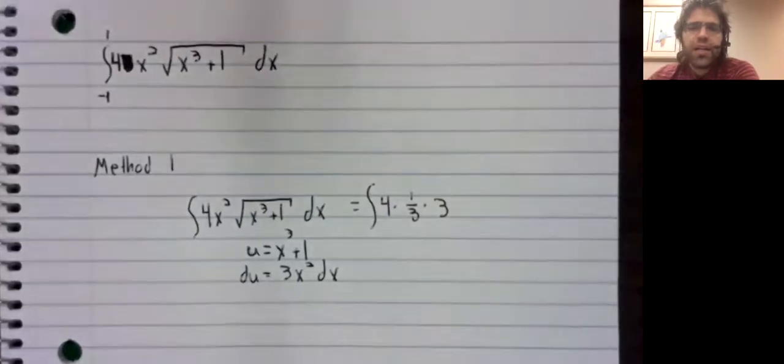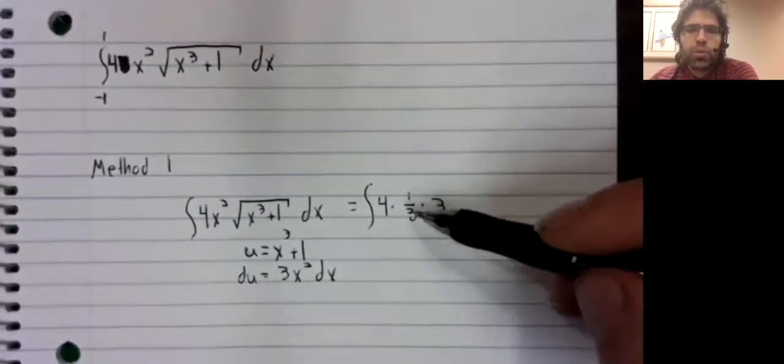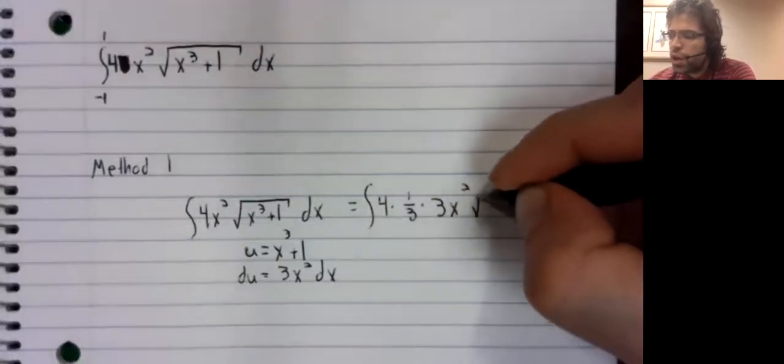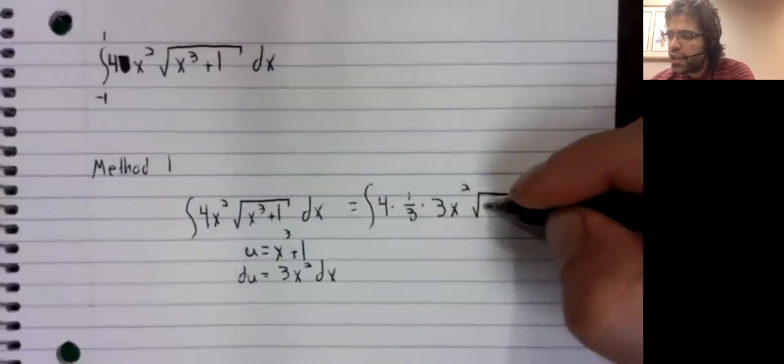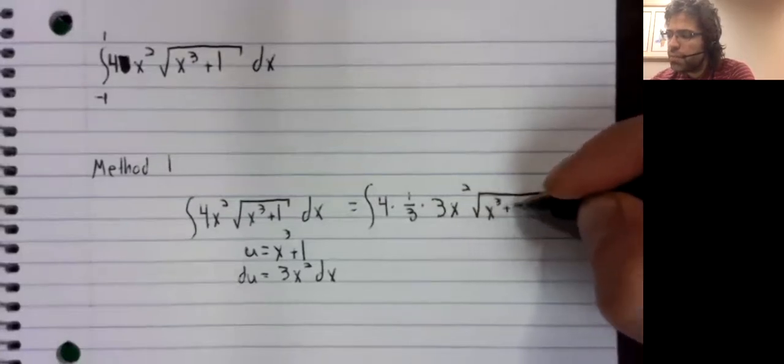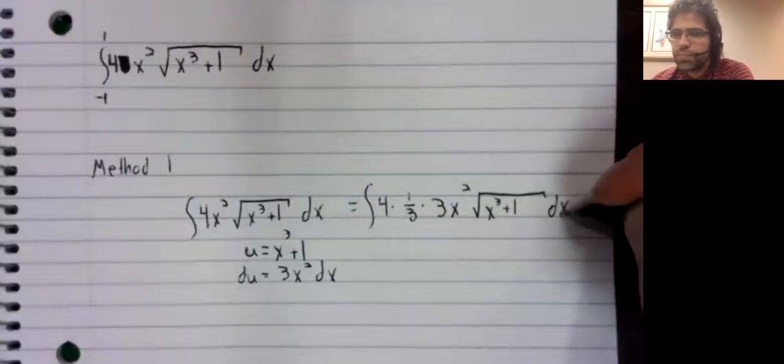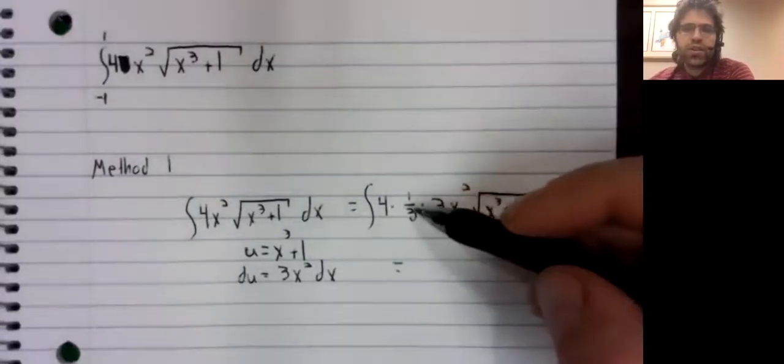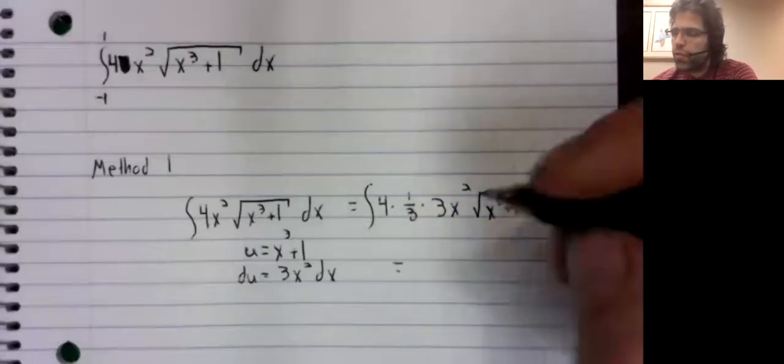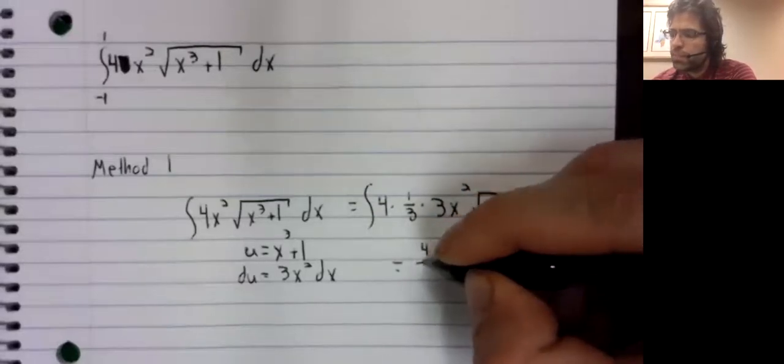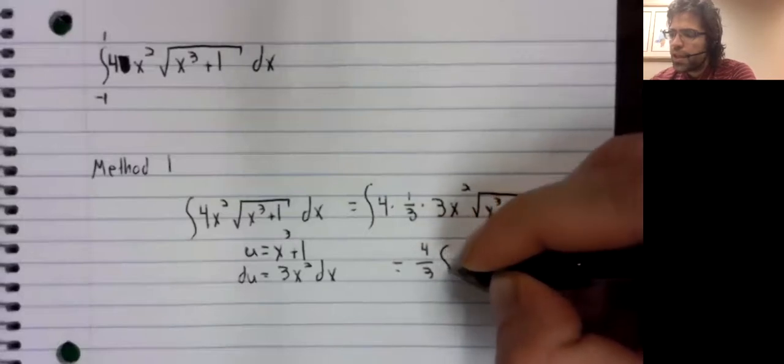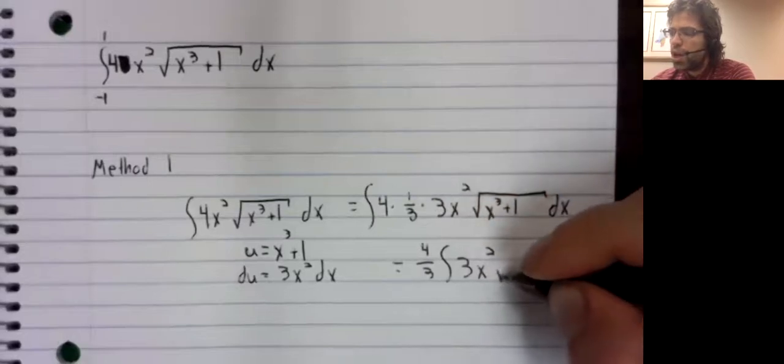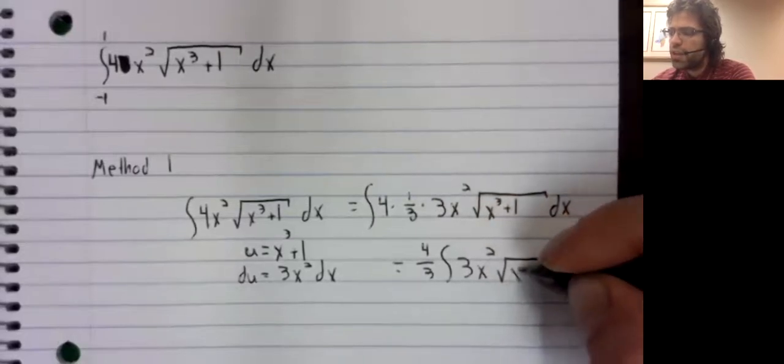We don't have 3x squared, we have 4x squared, but that's not a real problem. If we want to have a 3, we can have a 3. We'll multiply by one third so that we are not changing anything. And now this four and this one third together give you four thirds. And we can pull a constant out of an integral.